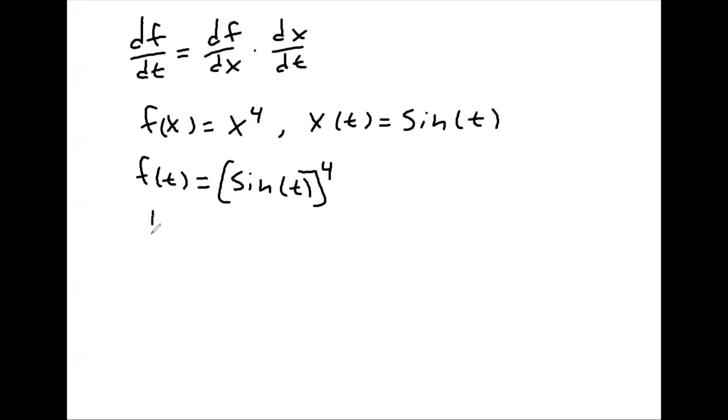And so if I find the derivative of f with respect to x, that would be 4x cubed. And then if I find the derivative of x with respect to t, that would be cosine of t.